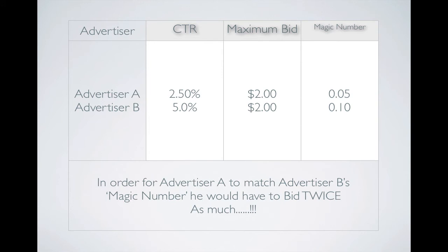Let me show you what I mean. Advertiser A has a 2.5% click-through rate and a maximum bid of $2. Multiply 2.5 by $2 and you get a magic number of $0.05. Advertiser B has a click-through rate of 5% — twice Advertiser A's — with the same maximum bid of $2, giving a magic number of $0.10, which is twice Advertiser A's.